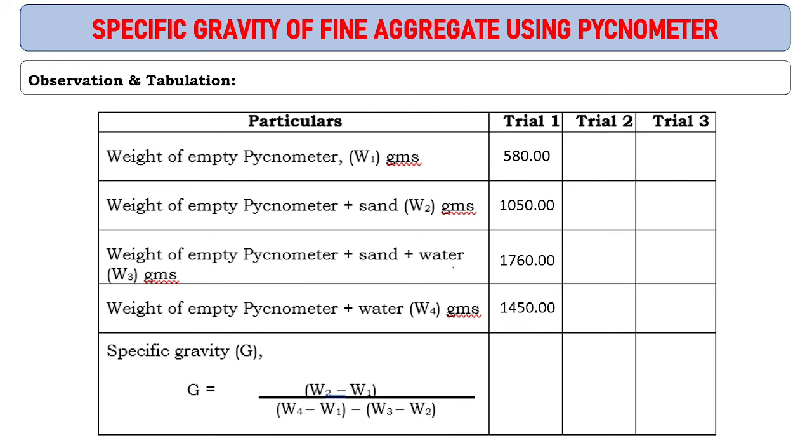Substituting the values into the given formula, we get the specific gravity as 2.93. This is the first trial.